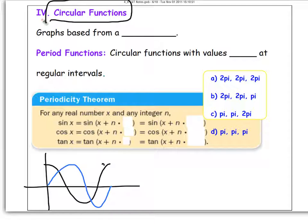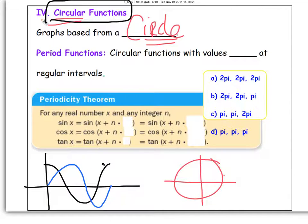Be careful, a lot of people will think the equation for a circle itself is a circular function. That's not true. An actual equation for a circle comes from a cone and that's called conic. Now, the key thing here we want to talk about are period functions. These circular functions have periods that they repeat themselves. Circular functions with values that repeat at regular intervals.